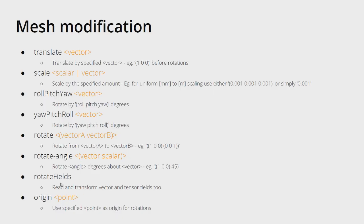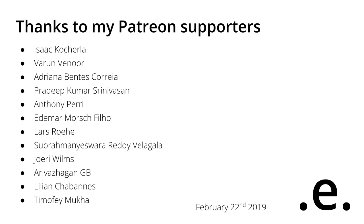There are two additional auxiliary fields: origin and rotateFields. With origin you can specify a custom center of rotation, not just the default zero zero zero. rotateFields also rotates vector and tensor fields — so if you already have pre-calculated results and want to rotate the entire case including the velocity field or the tensor field of a turbulence model, you can do so. That's everything I wanted to show you with flippy and floppy — I hope you find it useful and I hope to see you next time.